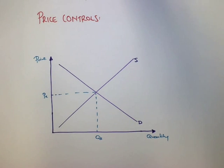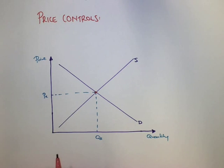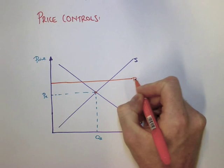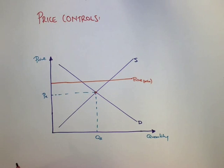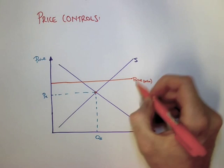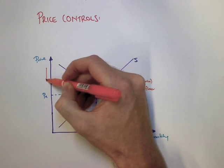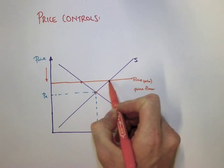Price controls are a situation where the government decides to set a price that is above the equilibrium. We call this price control a price minimum, sometimes called a price floor, where prices cannot drop below this level.